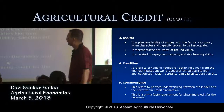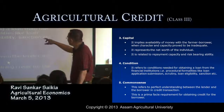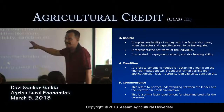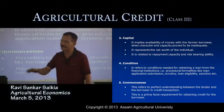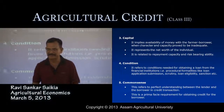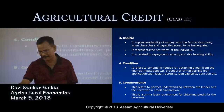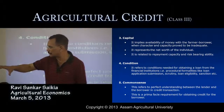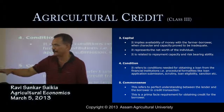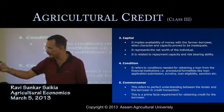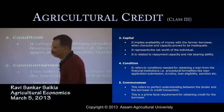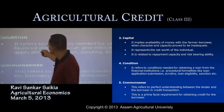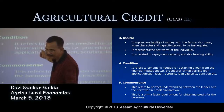The fourth C is condition. It refers to the conditions needed to obtain a loan from a financial institution. There are several formalities generally followed by banking organizations in sanctioning a loan to farmers, including different steps for loan sanctioning. All these are considered under the fourth C — condition.